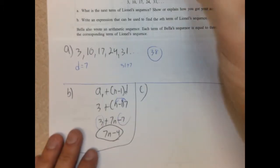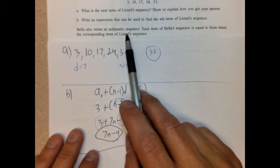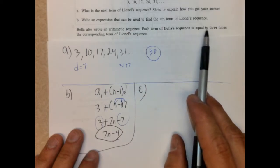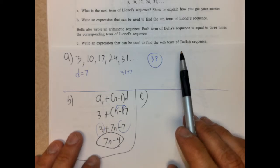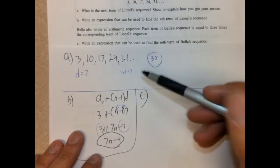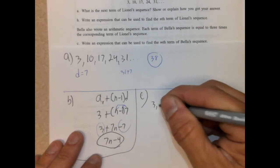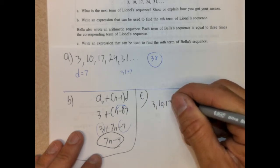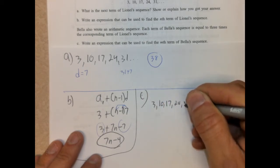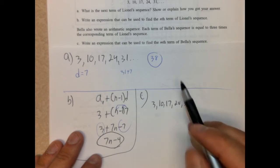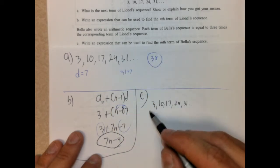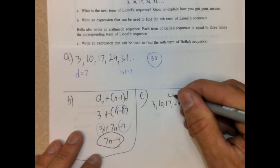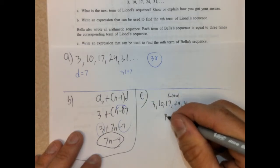Part C. Bella also wrote an arithmetic sequence. So 3 times each term in Bella's sequence is equal to 3 times the corresponding term of Lionel's sequence. Okay. So it's 3 times all these. So let's start Lionel's first. So 3, 10, 17, 24, 31. Okay. So hers is going to be 3 times that. So write an expression that can be used to find the Nth term. Okay. So let's go ahead and just write her sequence. So this is Lionel's. And this is going to be Bella's.